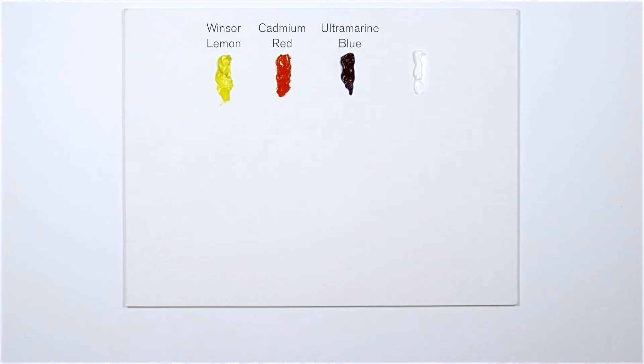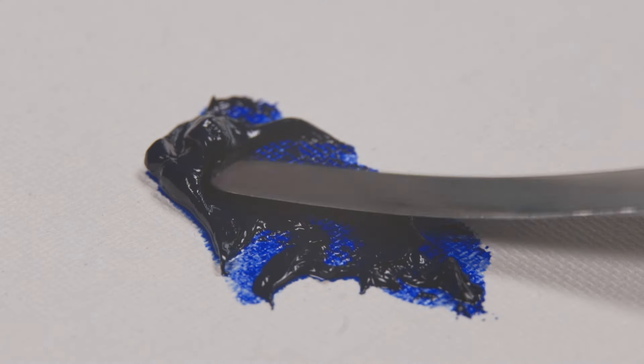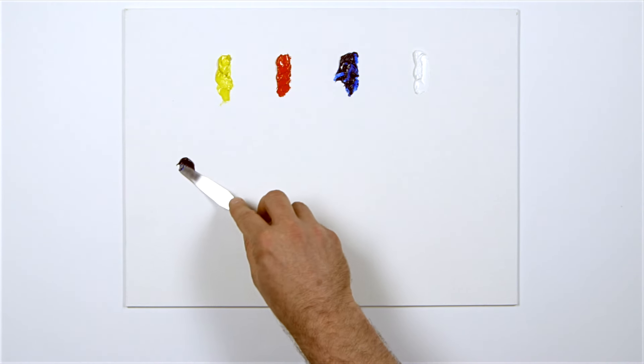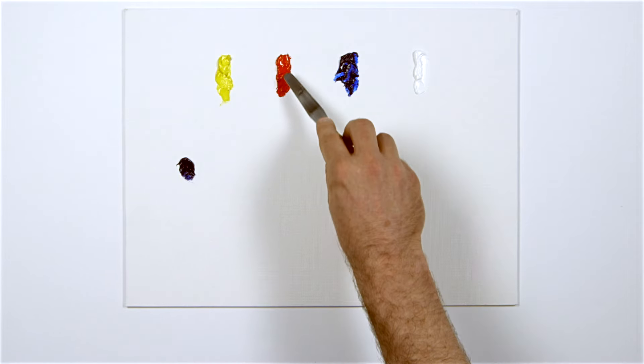The colours are rather raw and brash, so I'm going to start by mixing a black. I'll start with blue as it is the weakest in pigmentation and will add very little red and yellow relative to this.